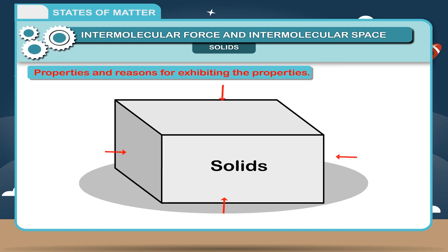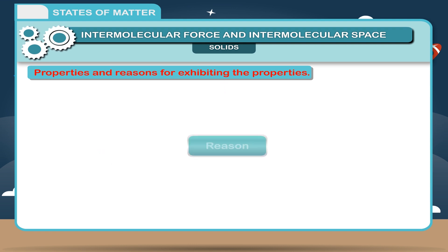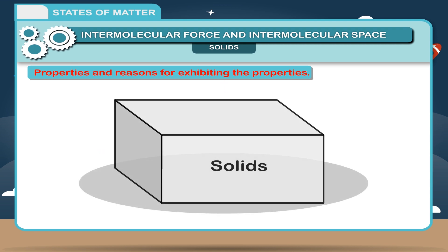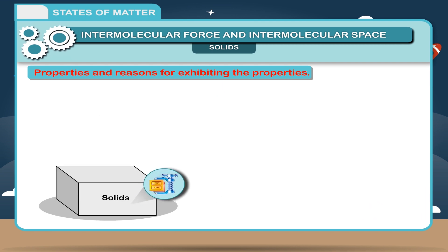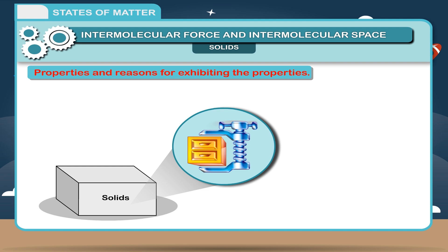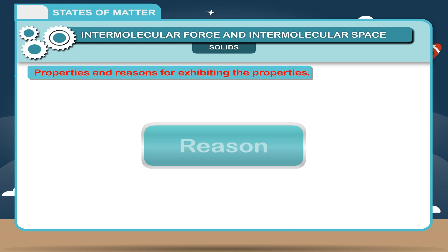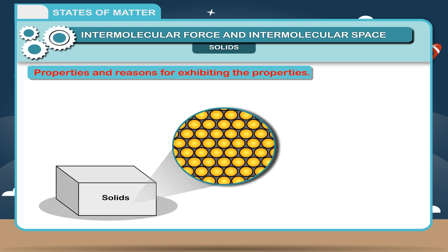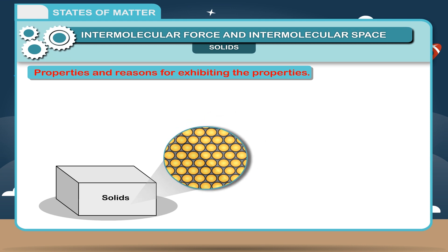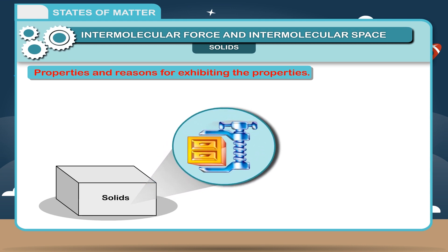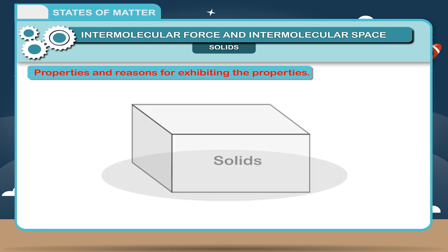Solids cannot flow. Reason: Due to the strong intermolecular forces, they cannot flow. Solids are incompressible. Reason: As there is no place left in between the molecules, molecules cannot move closer to each other. As a result, solids are incompressible.